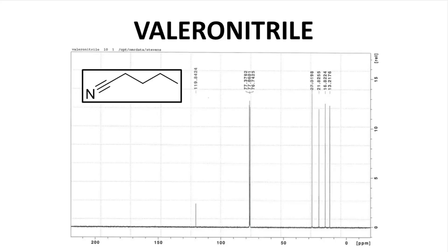Next is a compound called Valeronitrile, which has five carbons, including the nitrile. Again, the solvent is CDCl3 with a signal close to 77 ppm. The four sp3 hybridized carbons have chemical shifts of less than 77 ppm.